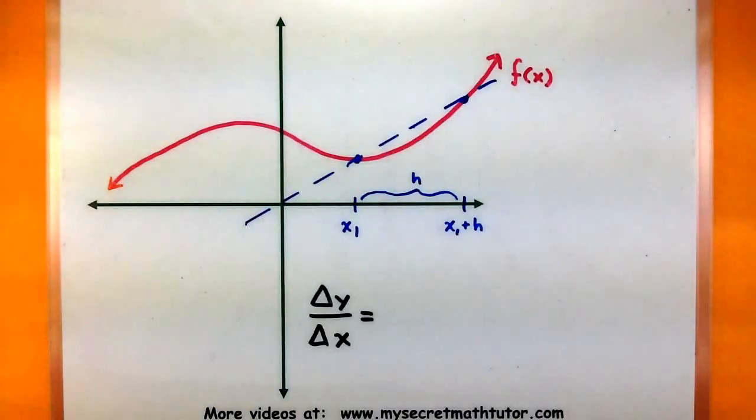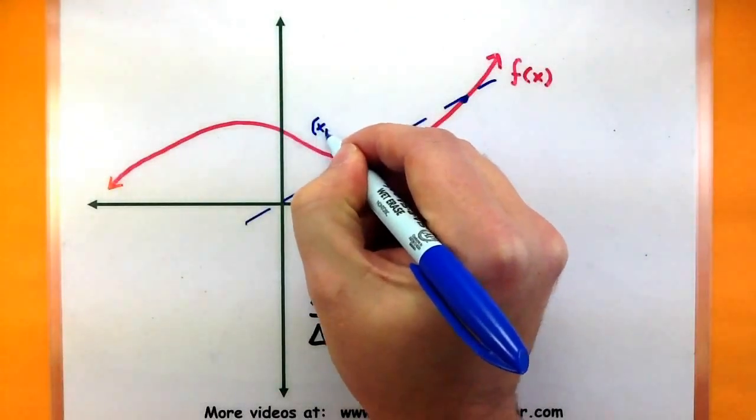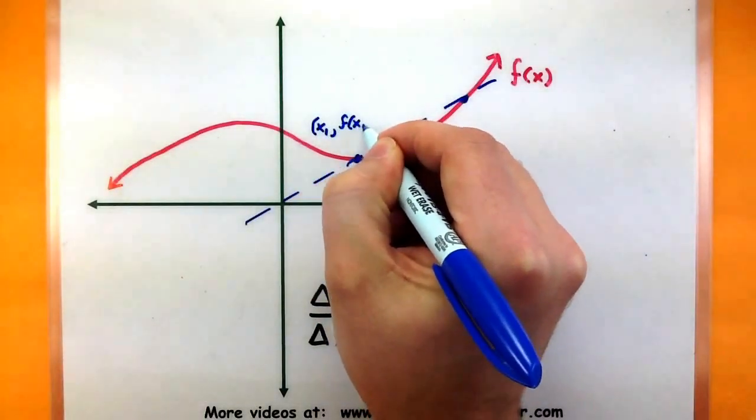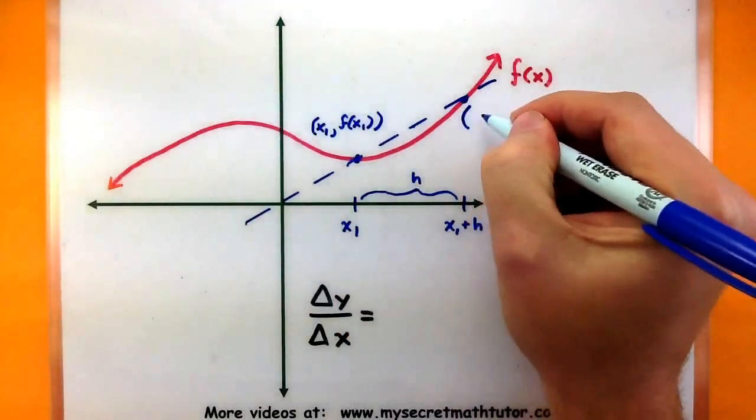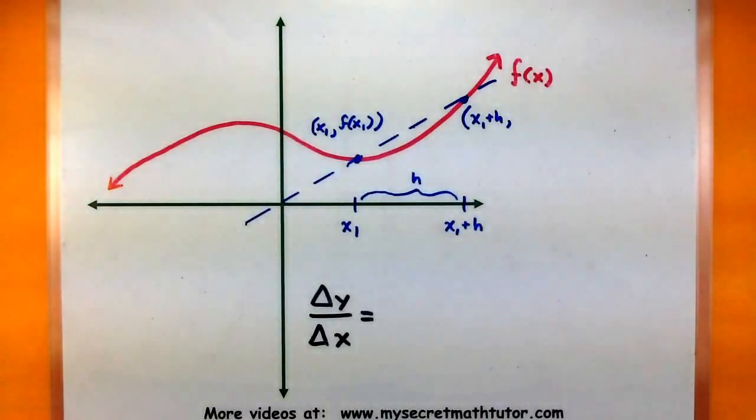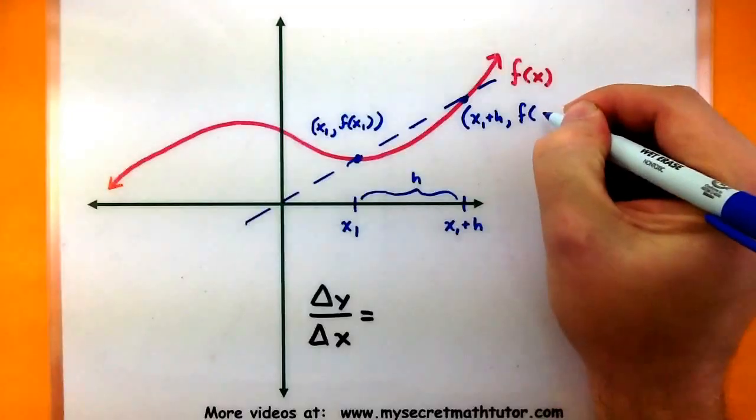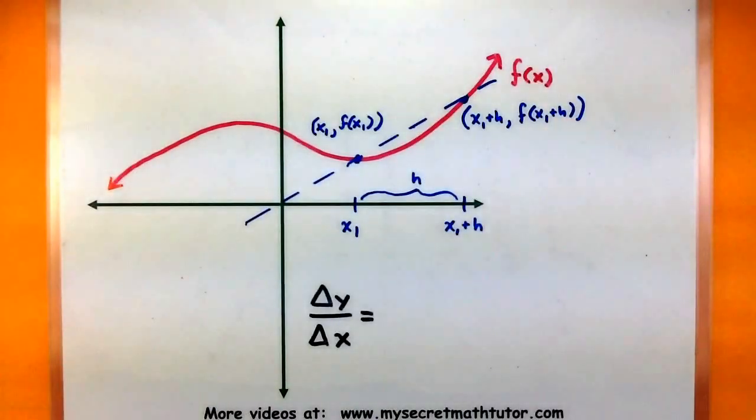Now in order to do the average rate of change, I need some y values. Well, we'll define that first point exactly the same way as we did before. So x1, and I basically plug it into the function f of x1. And I do the same thing with the second point. So it has an x value at x1 plus h. And I could take that value and plug it into the function and get f of x1 plus h. So essentially, I'm defining the x and y values in terms of the first point and a distance from that first point. Now let's go ahead and compute the slope of our secant line and see the formula that this builds.